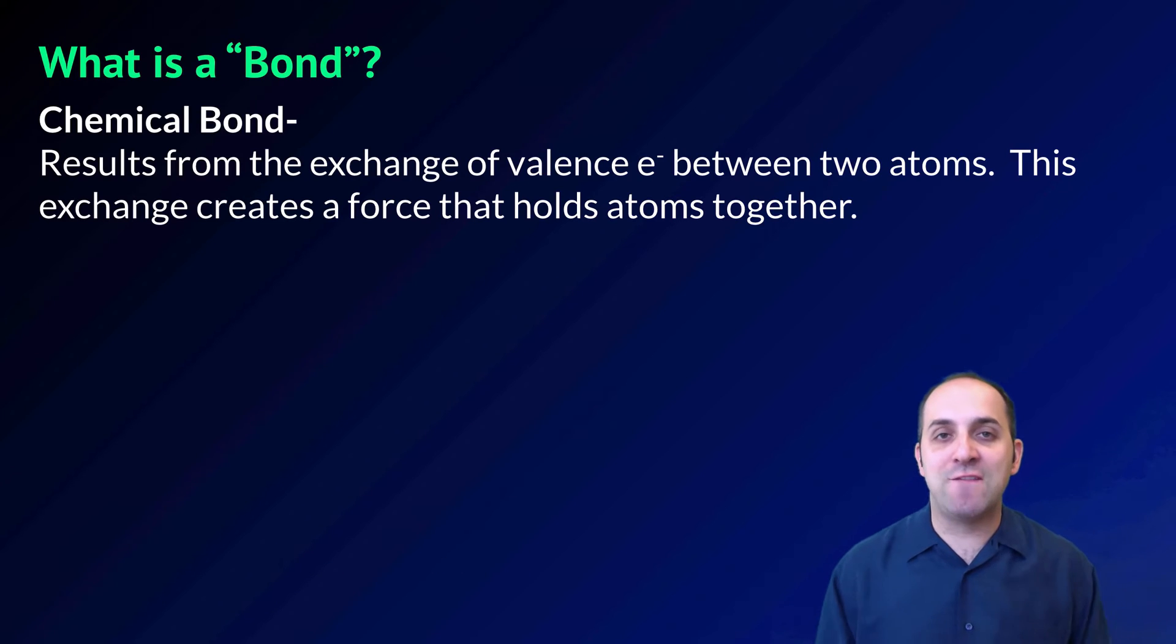Let's begin by getting a formal definition of this notion of a bond. A chemical bond results from the exchange of valence electrons between two atoms. This exchange is going to create a force that's going to hold those atoms together. That's the chemical bond.